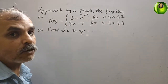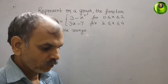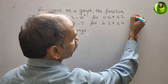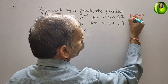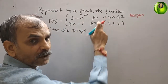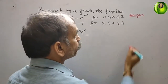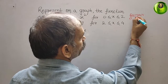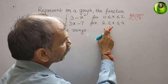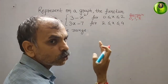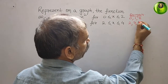First we will find out the domain — domain are the values of x. For the first piece, they have given 0 less than or equal to x less than or equal to 2, that means x = 0, 1, and 2. For the second piece, they have given 2 less than or equal to x less than or equal to 4, that means x = 2, 3, and 4.